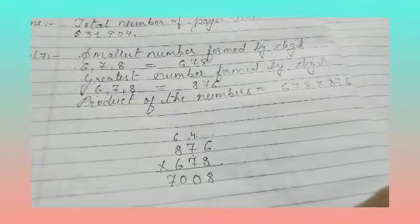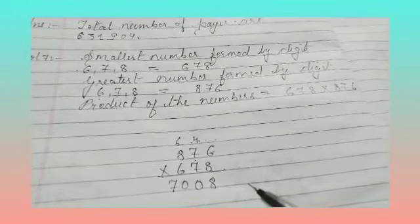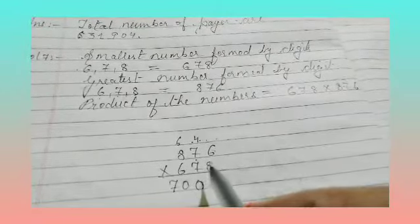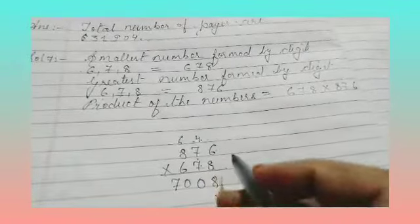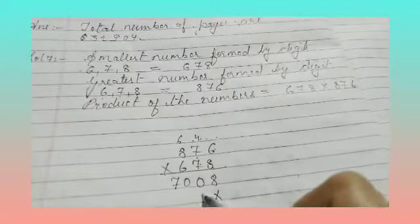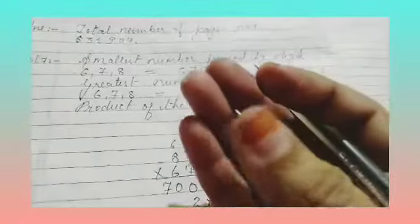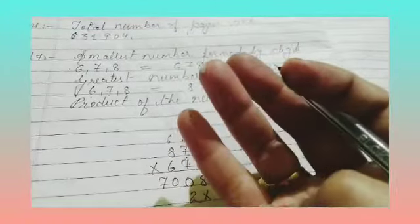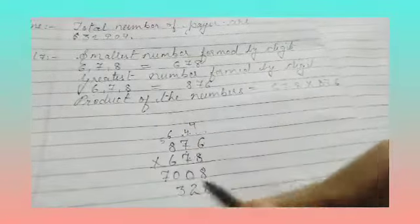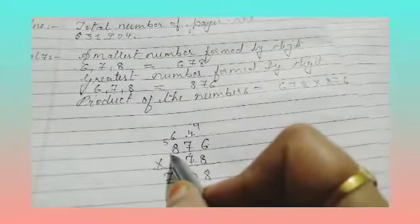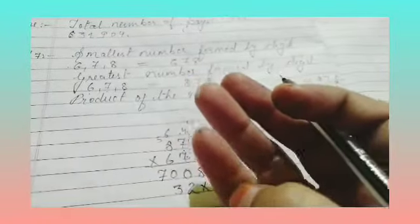Okay children. Now 7 times 6 is 42. Write 2, carry 4. 7 times 7 is 49, 50, 51, 52, 53. So 3, carry 5. 7 times 8 is 56, 57, 58, 59, 60, 61.